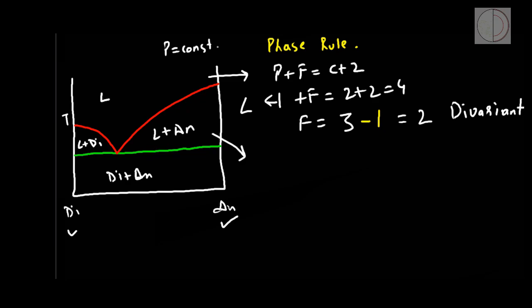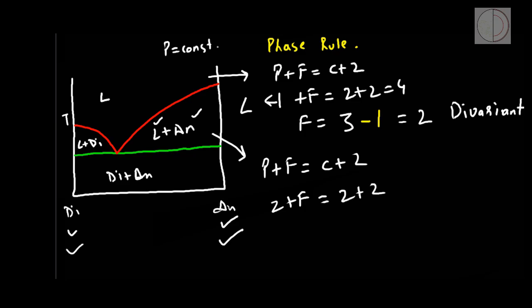If we look at the anorthite plus liquid field, the phase rule gives P plus F equals C plus 2. Number of phases is 2 — one of anorthite and the other of liquid. Number of components is still 2: anorthite and diopside. So degree of freedom is 2. With pressure kept constant, we reduce it by one, leaving a degree of freedom of 1. Hence these fields are univariant.